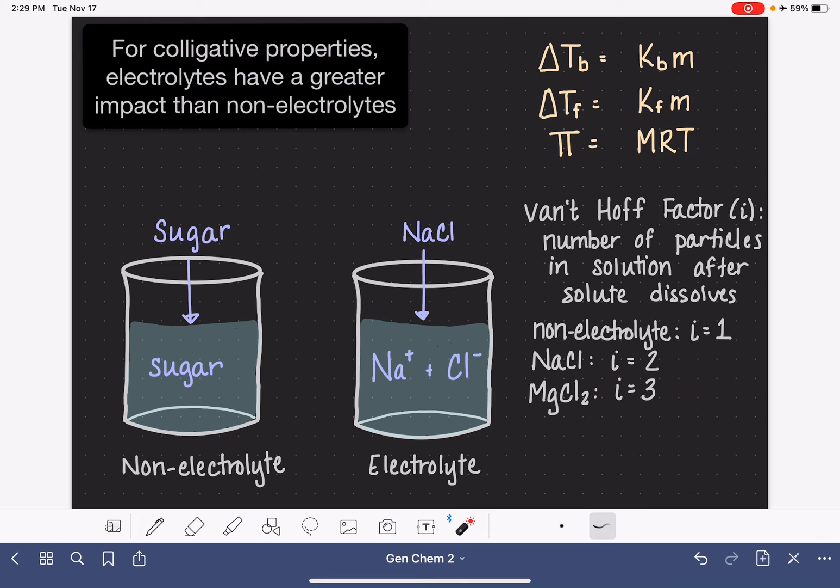In our equations for the colligative properties, the van't Hoff factor is included along with all of the other variables that we use to calculate these different properties. We typically write it at the beginning of the equation and it's pretty normal to include this i variable in all of the colligative properties.